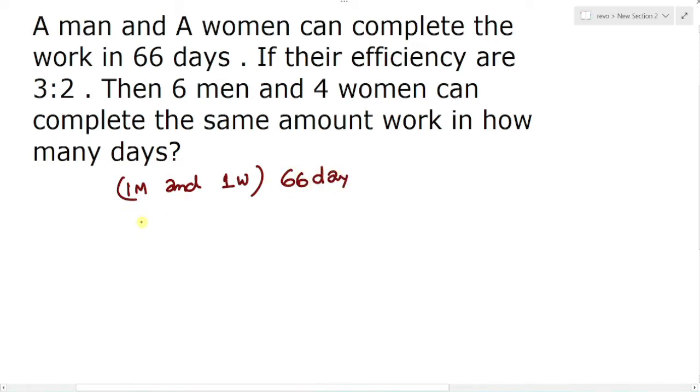Efficiency of men and women is given in ratio, so assume that man is doing three units and woman is doing two units a day, simply three is to two. So in 66 days how many units they will complete? Simply 66 into five units, that will come 330 units correct.